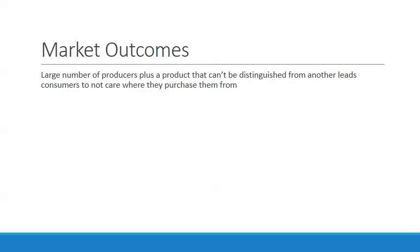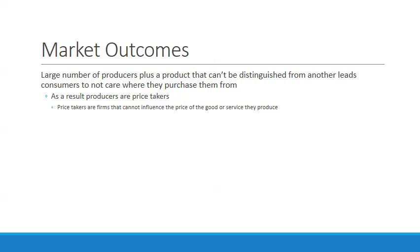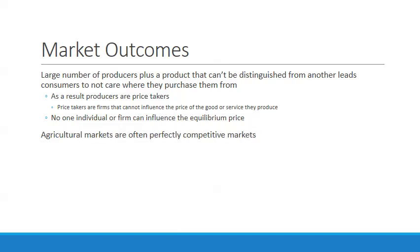Looking at the market outcomes for a perfectly competitive market: there are a large number of producers, and a product that can't be distinguished from another leads consumers not to care where they purchase from. So the producers are what we call price takers — firms that cannot influence the price of the good or service they produce. No individual or firm can influence the equilibrium price.